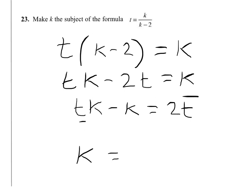We can now see that we've got k in both terms, so we can take k out as a common factor, and we'll have k times t minus 1 equals 2t.